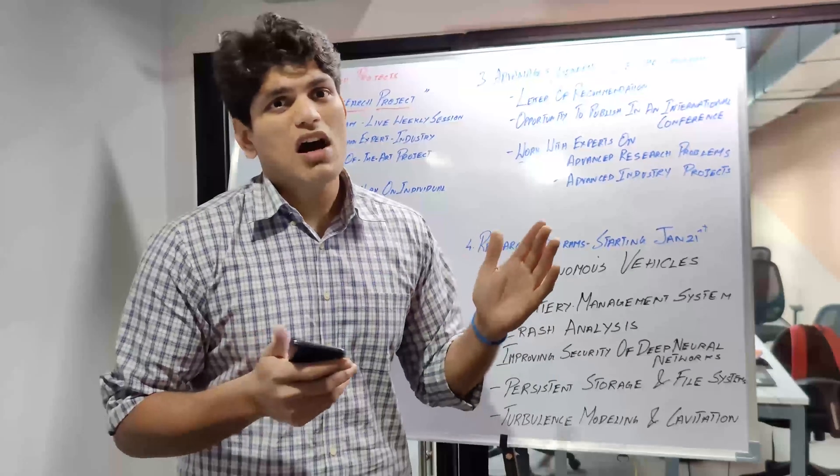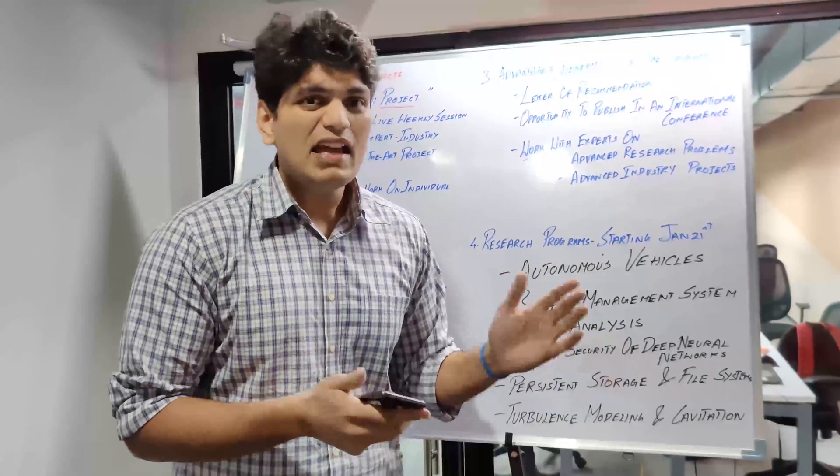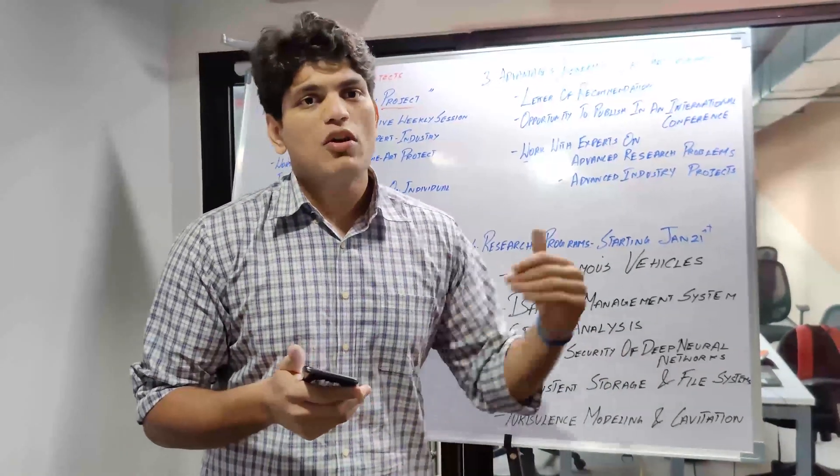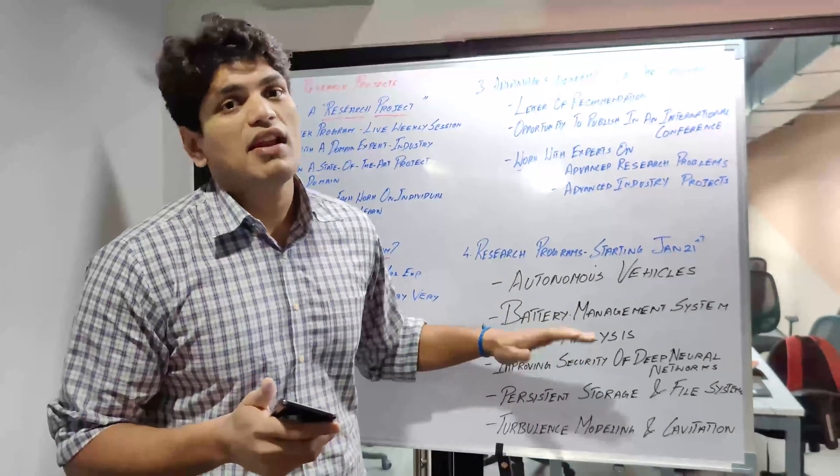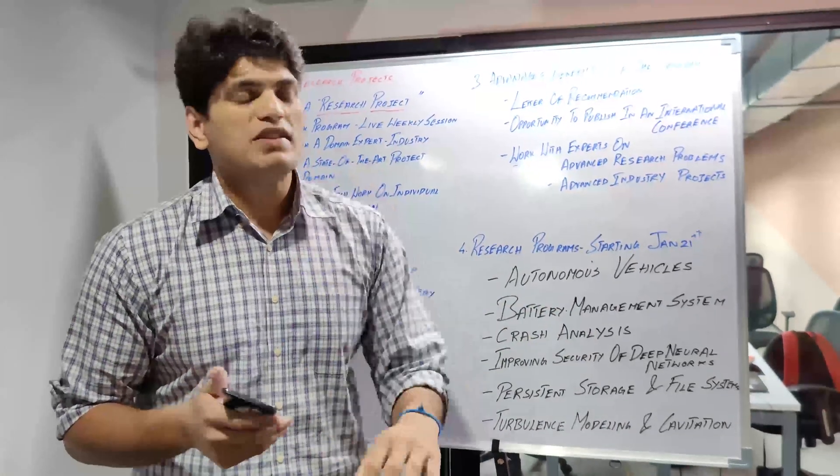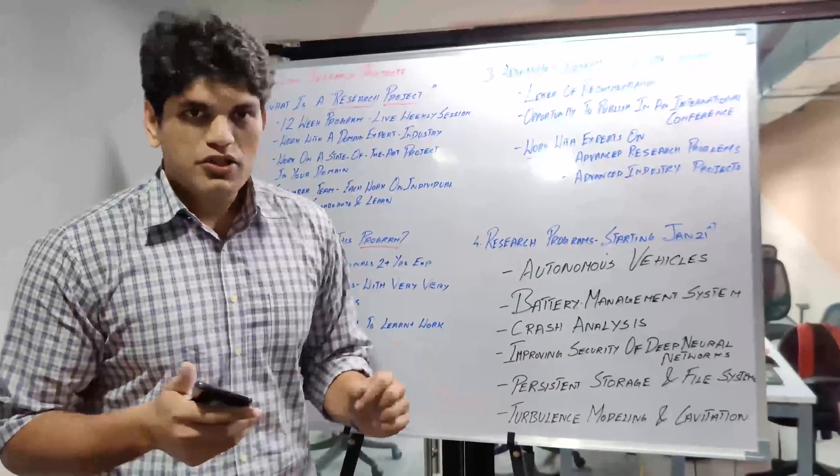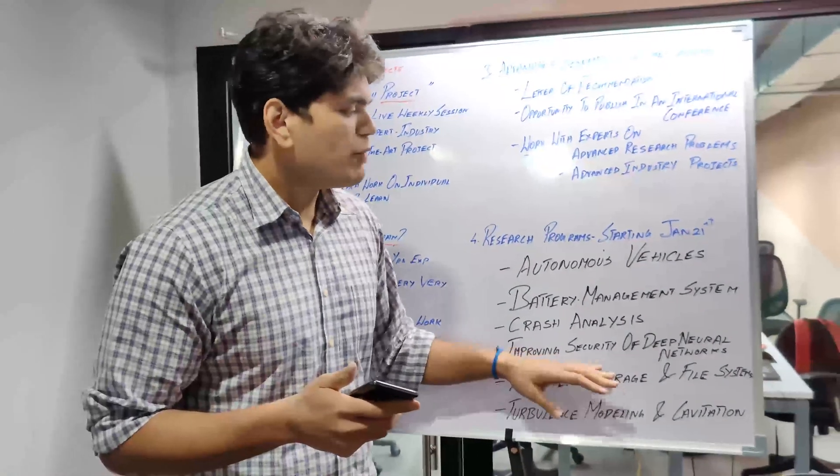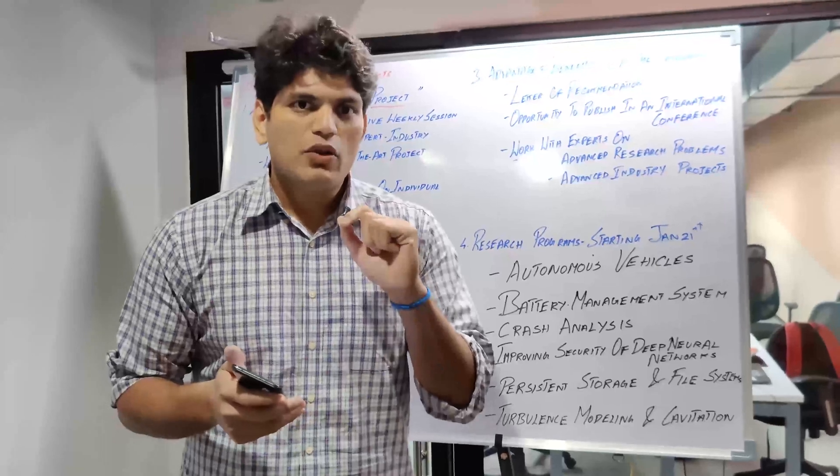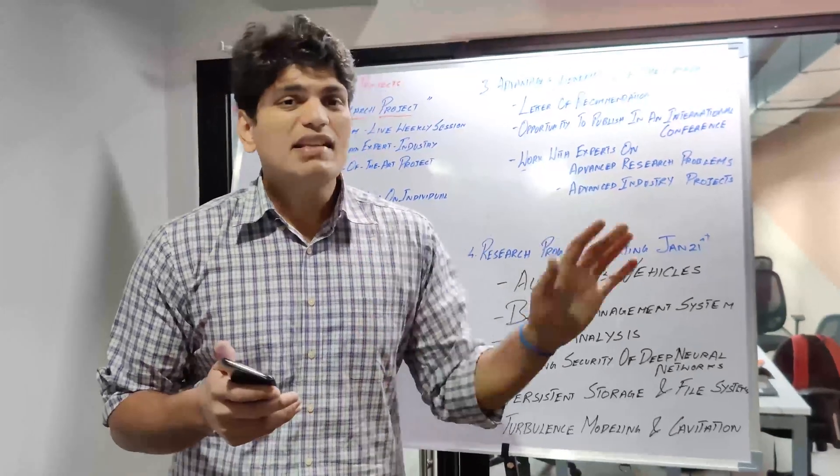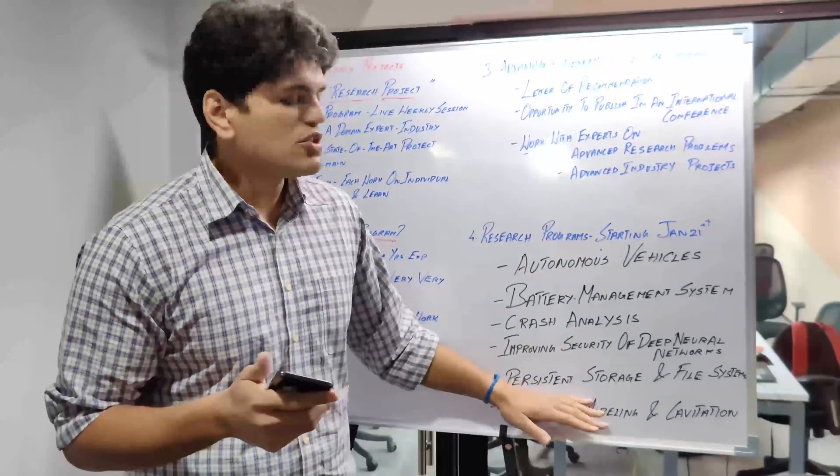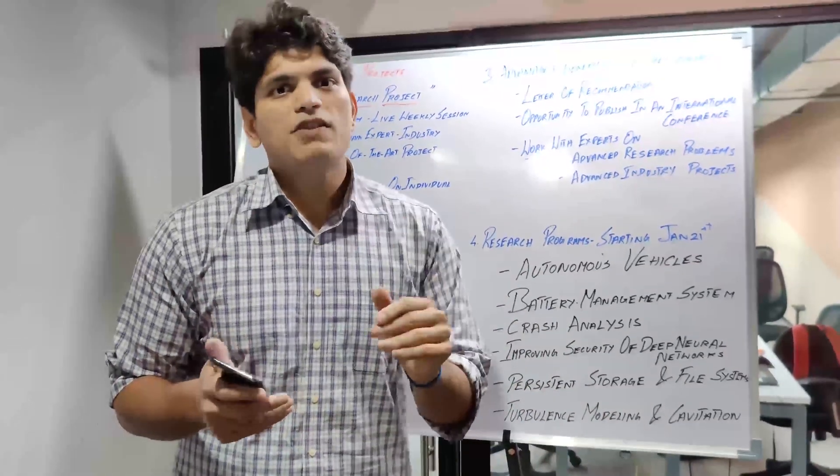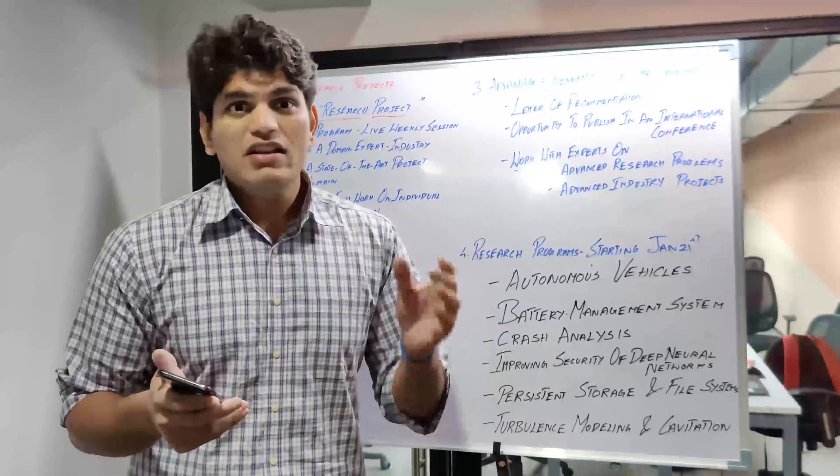For computer science students, improving security of deep neural networks, so that's the next research project. These are projects that are led by industry professionals. For example, persistent storage is by a professor from University of Texas at Austin. He will be the lead researcher. You will interact with the lead researcher and understand what are the deliverables, and he will guide you over the project.